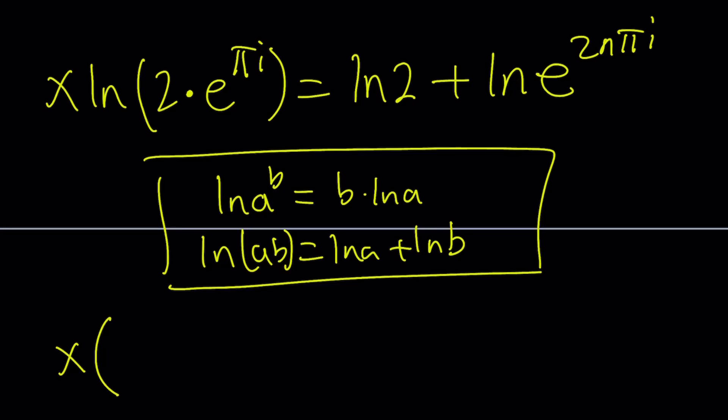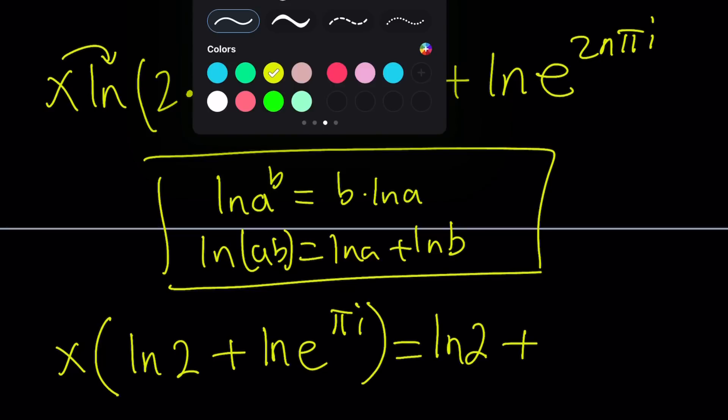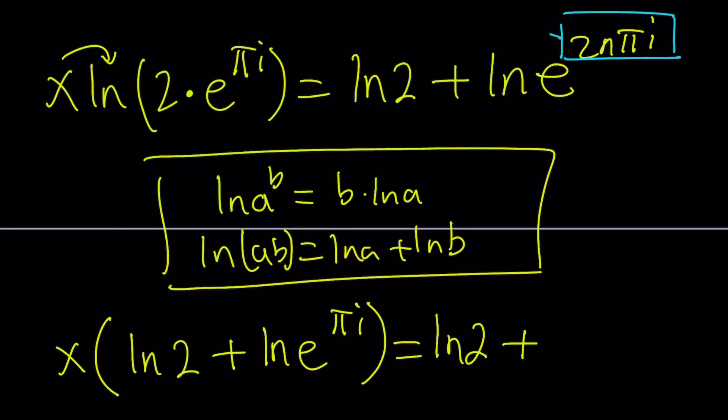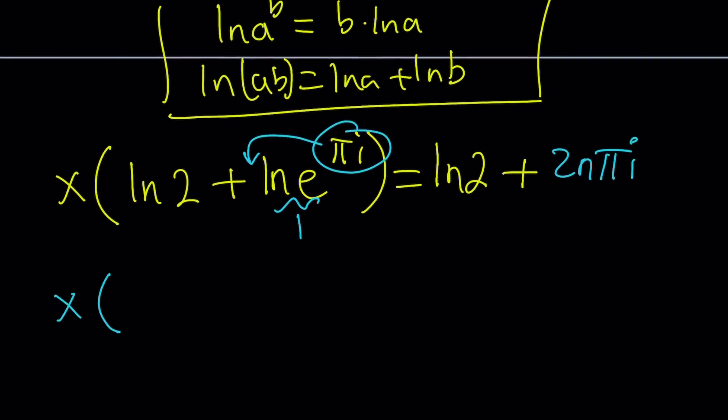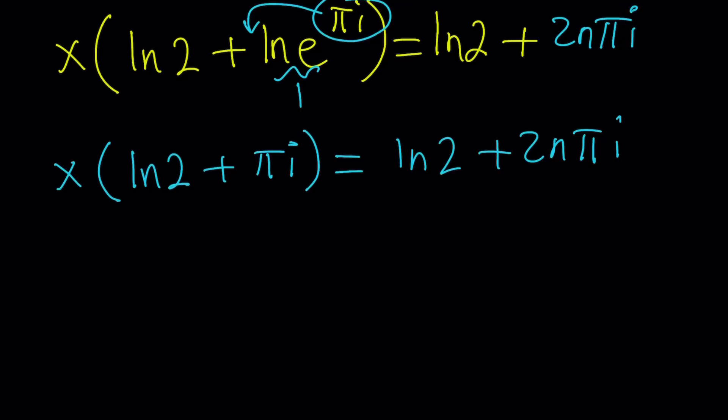So, now we have a product, so we've got to use the product rule one more time. Let's take the x out, because that's going to be a sum. So, x will be distributed over the sum. We're going to write it as ln 2 plus ln e to the power pi i equals ln 2 plus, what about this? We can use the power property one more time. It's all about using the properties of logs, and that's going to give us 2n pi i multiplied by ln e, but ln e is equal to 1. Same thing happens here. ln e is equal to 1. We can go ahead and bring this to the front, and we're going to get the following: x times ln 2 plus pi i equals ln 2 plus 2n pi i. So, if you go ahead and divide both sides by ln 2 plus pi i, we're going to get x equals ln 2 plus 2n pi i divided by ln 2 plus pi i.